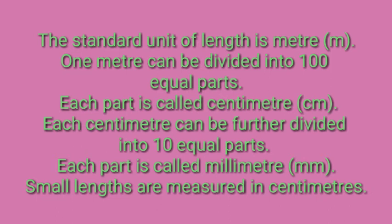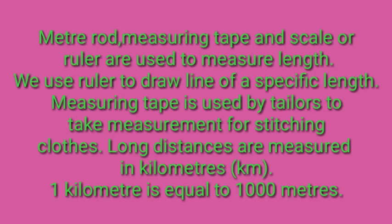For long lengths, we also use kilometers. If a meter is divided into one hundred parts, one part is a centimeter. If a centimeter is divided into ten equal parts, one part is a millimeter — which is a very, very small unit. With the help of your scale, you can measure centimeter units. The instruments used to measure length are the meter rod, measuring tape, and scale or ruler.